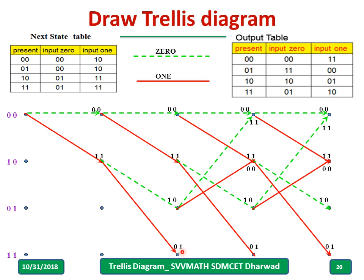From present state 11 with input 0, the next state is 01 — draw a dotted line from 11 to 01 and label the output 01. From present state 11 with input 1, the next state is 11 — draw a solid line from 11 to 11 (a self-loop) and label the output 10. Add parallel lines and write output 10 on each. This completes the construction of the Trellis diagram.